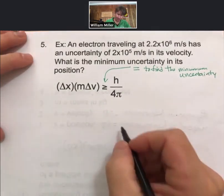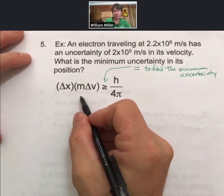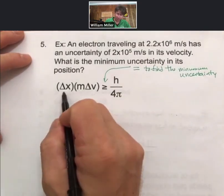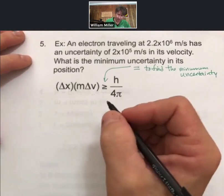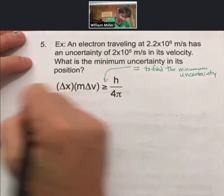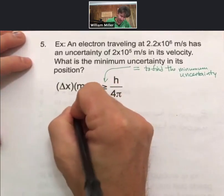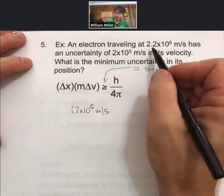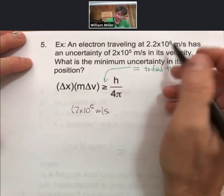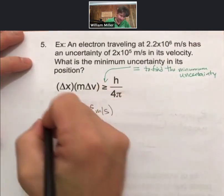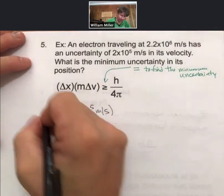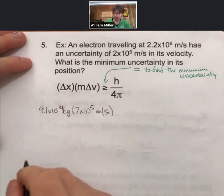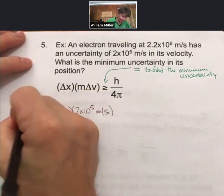So we'll set it to an equal sign. We know the mass of an electron. It's on our conversion and equation sheet. We now have been told the uncertainty in velocity. We will solve for delta x. It's the only thing we don't know. Let's go ahead and plug numbers in and then solve for it. So delta v is going to be 2 times 10 to the 5th meters per second.